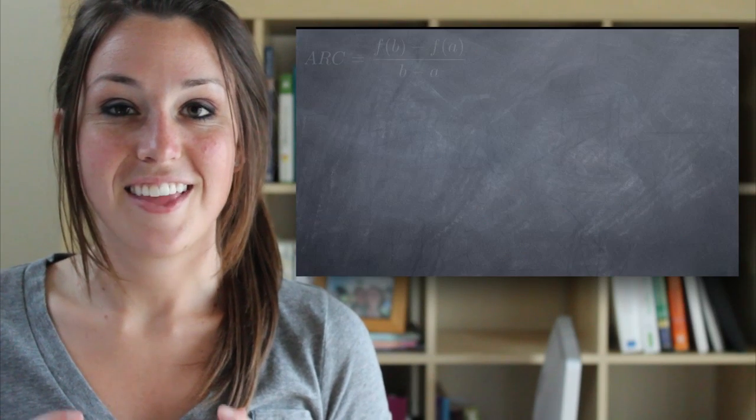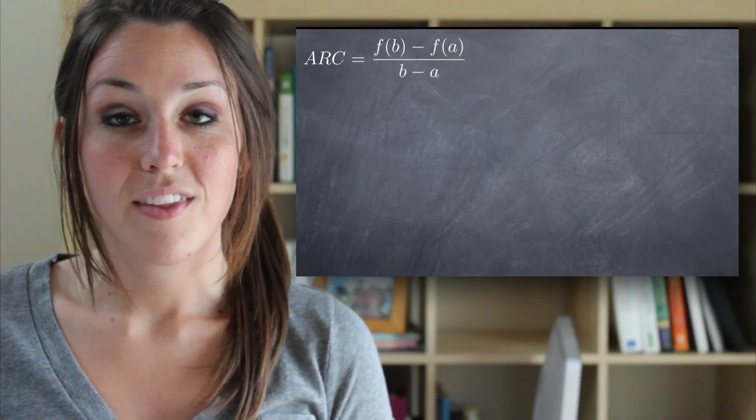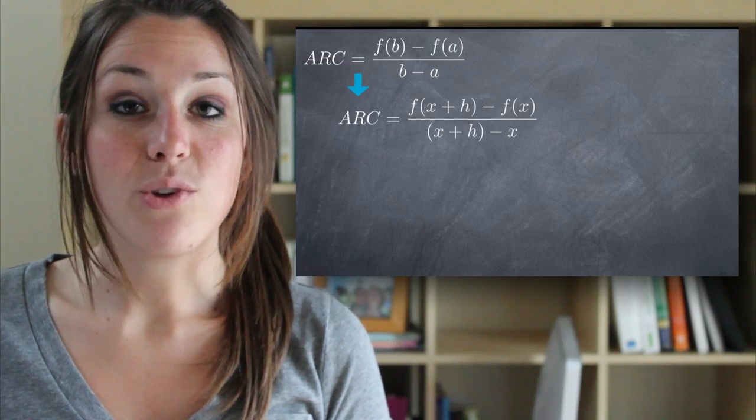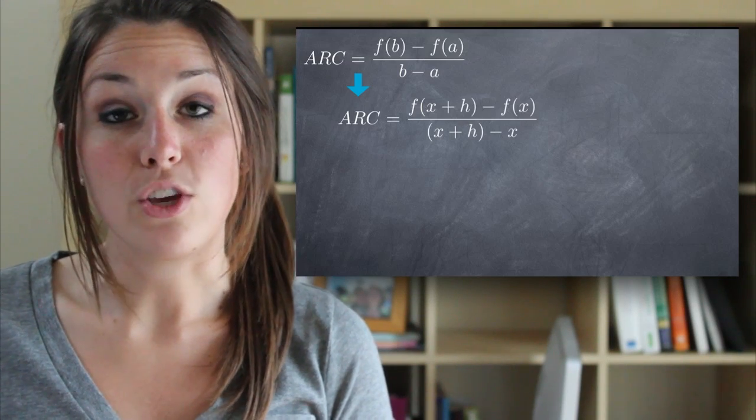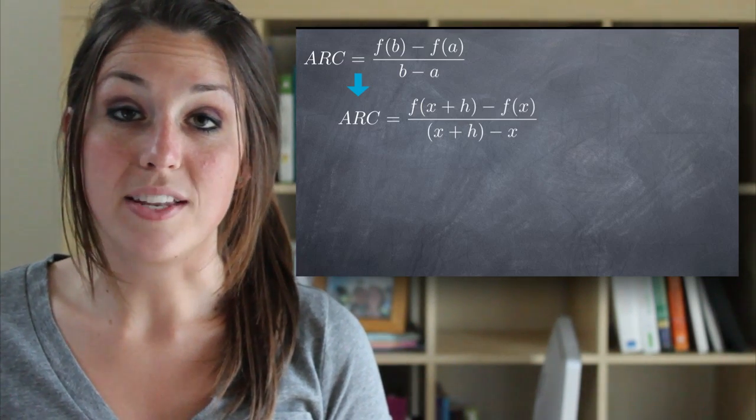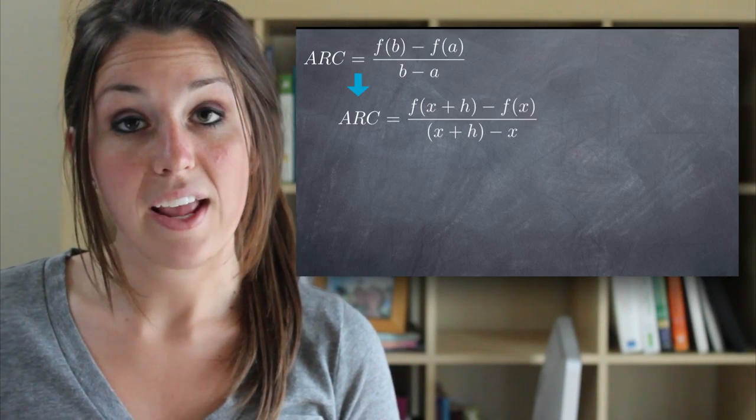This brings us to the definition of the derivative. Let's modify slightly the formula for average rate of change. Instead of using a and f of a, we'll use x and f of x, and we'll call the distance between the tangent point and the secant point, h.